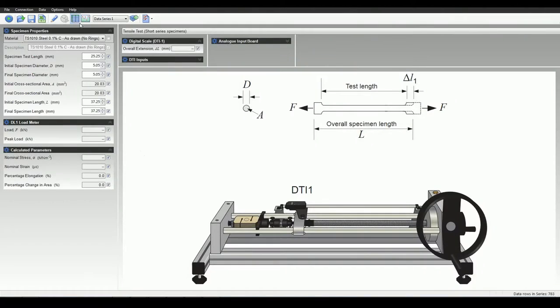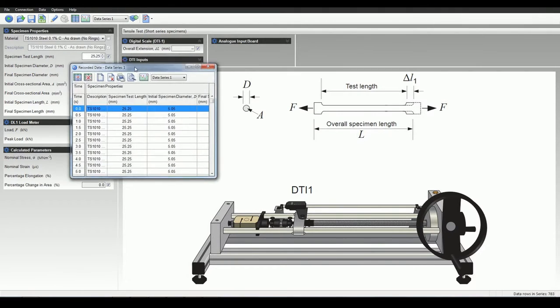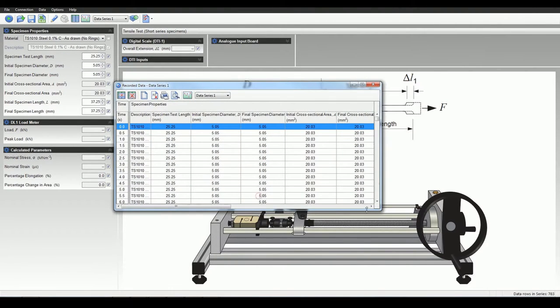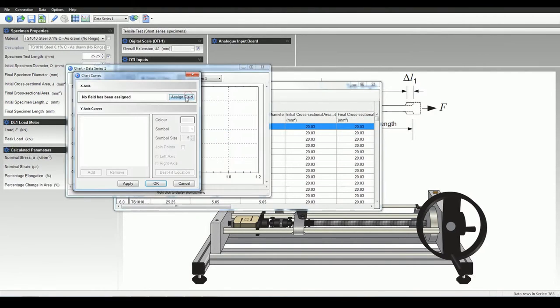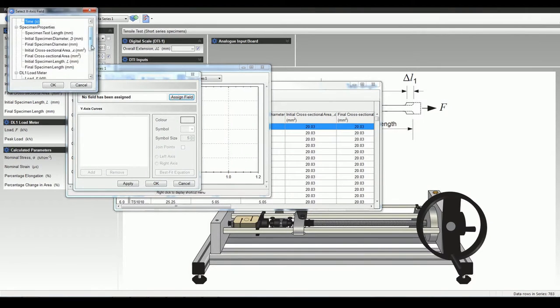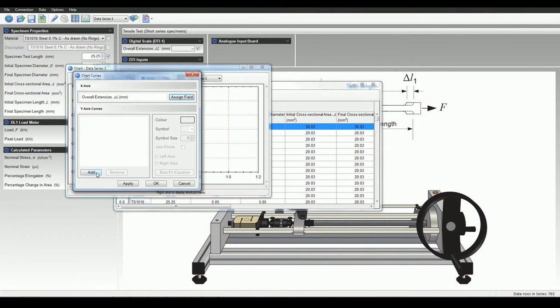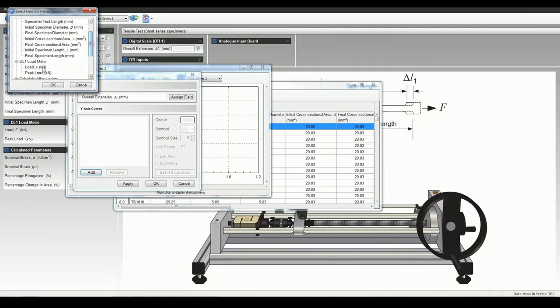Techquipment's tensile testing machine can connect to VDAS, our data acquisition system. VDAS gives accurate real-time data capture, monitoring and display, calculations and charting of all the important readings on the computer.